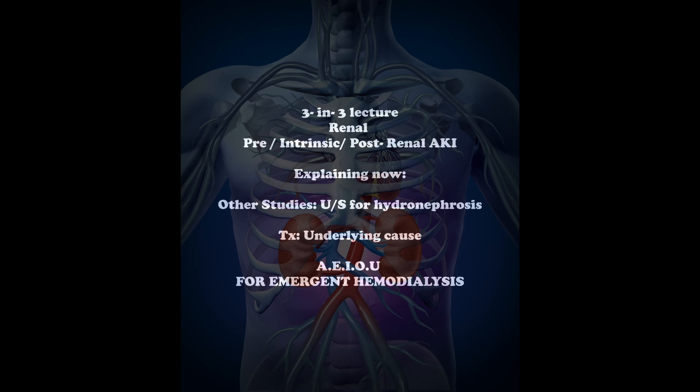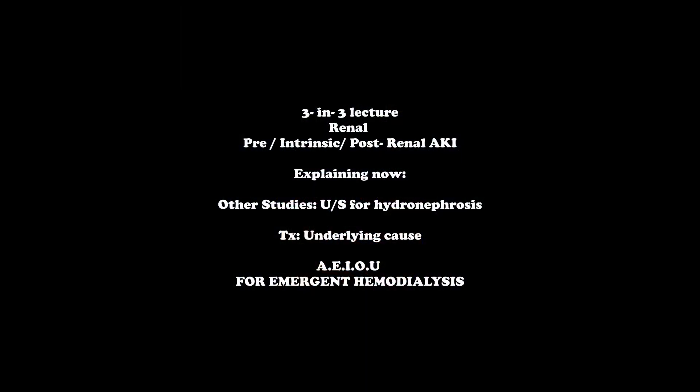For treatment, always treat the underlying cause. In pre-renal AKI, correct hemodynamic factors and replace volume. Remember the AEIOU mnemonic for urgent hemodialysis indications: A = Acidosis, E = Electrolyte abnormalities like hyperkalemia, I = Ingestion of poisons or nephrotoxic substances, O = fluid Overload, and U = Uremic symptoms.